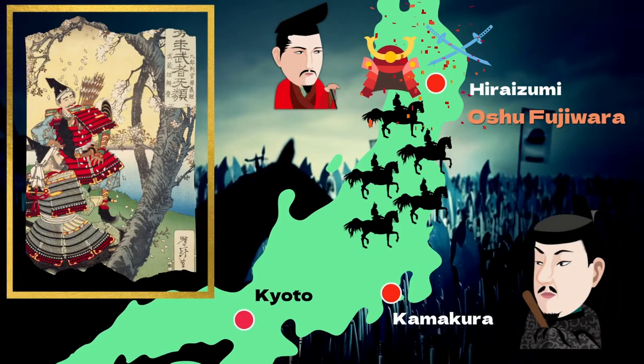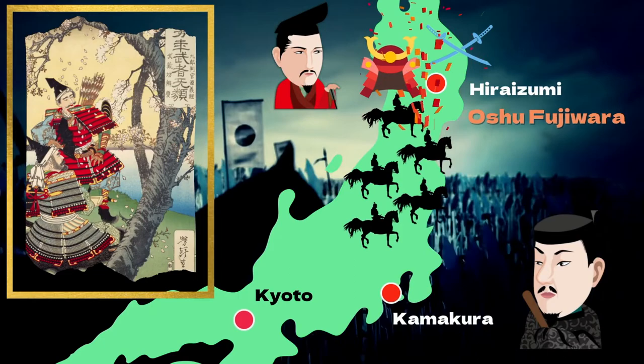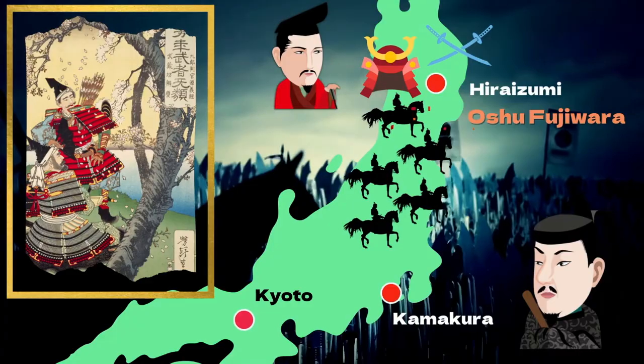Yoshitsune took refuge with the Oshu-Fujiwara clan in Tōhoku to escape his pursuers. However, Yoritomo sent an army to destroy the Oshu-Fujiwara, and Yoshitsune died. As a result, Yoritomo extended his rule to the Tōhoku region.